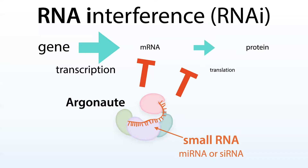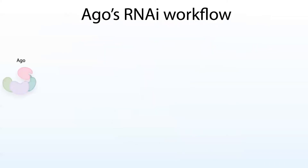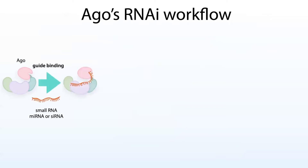Let's start with the Argonaute or Ago protein, which is the protein that I study for my PhD work. The Ago protein binds to a small RNA — this can be a microRNA or an siRNA, and we'll get into the differences between those later — and this forms the core RNA-induced silencing complex, or RISC.